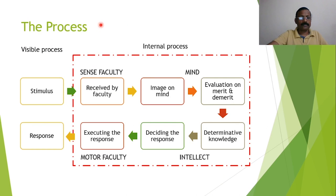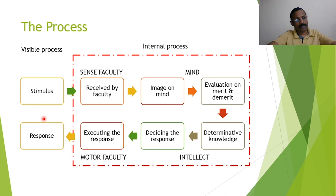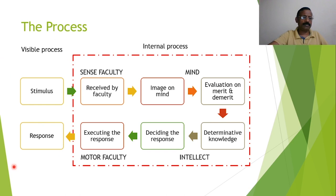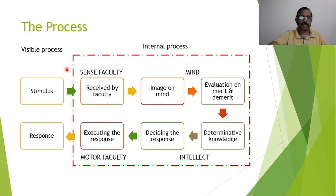Going to the details of the process: receiving a stimulus and responding to it is the only visible process. Some stimuli go inside and a response comes outside — this is the visible portion of the cognitive process. According to the received stimulus there will be a response, which can be behaviour. All stimuli are not received as such; there is a mechanism for interpretation, and the whole process happens inside — it is not visible outside.